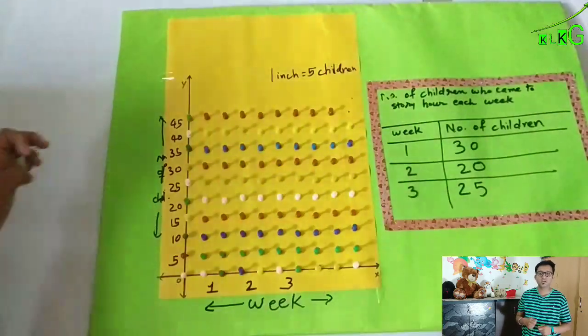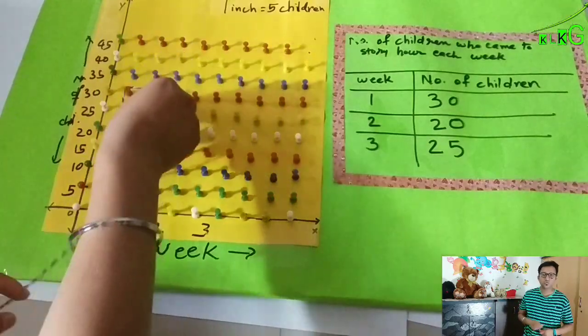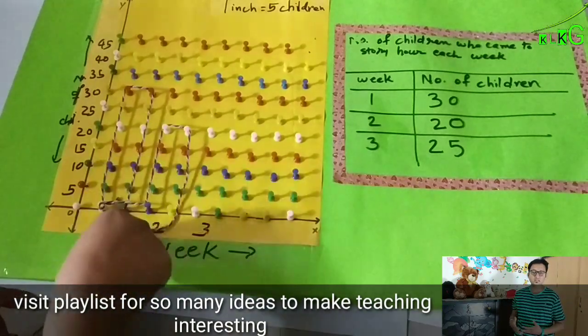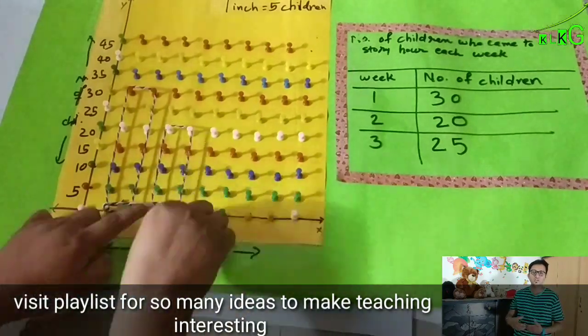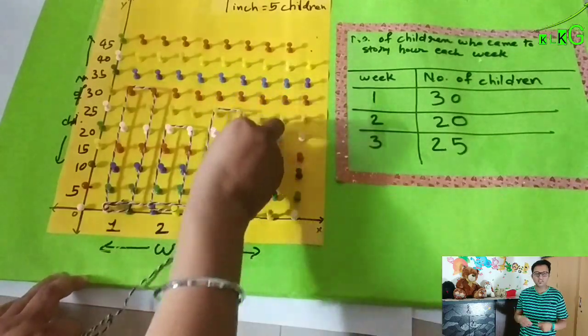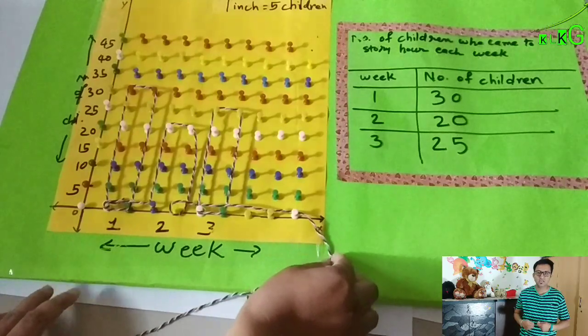Now we are going to take a thread and arrange it in this way so we can make a bar graph. It's very simple and we have to give it to children to do it by themselves so that they will enjoy arranging the threads and they will learn as well.